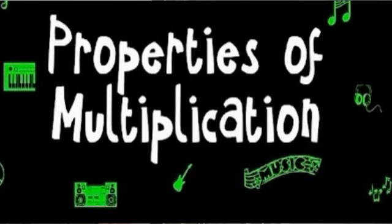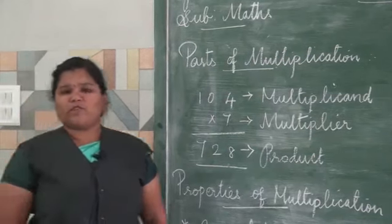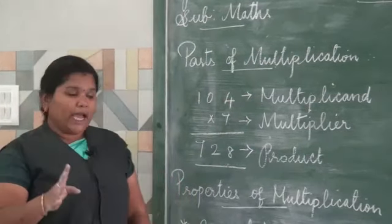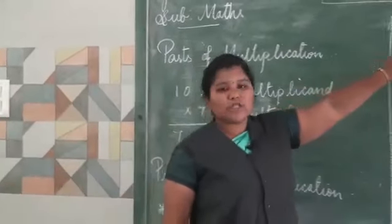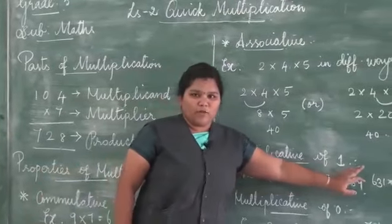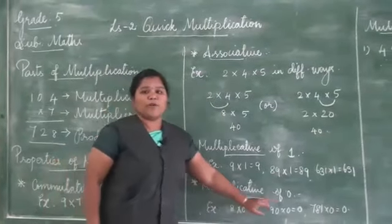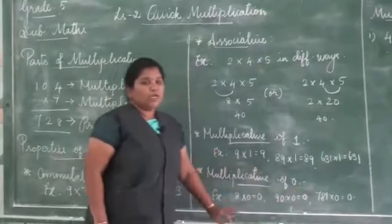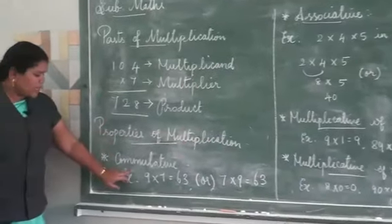Next we are going to see the properties of multiplication. There are four properties: commutative property, associative property, multiplicative property of one, and multiplicative property of zero. Let's have a brief explanation about each of these properties.